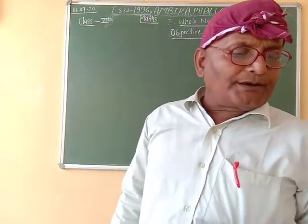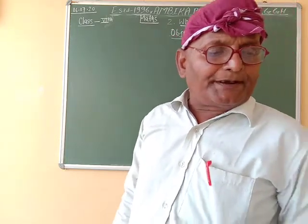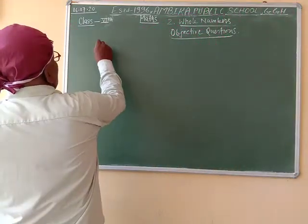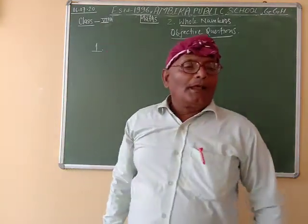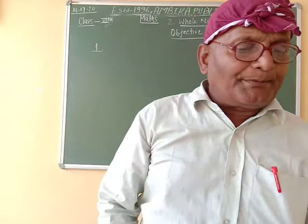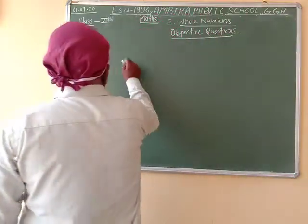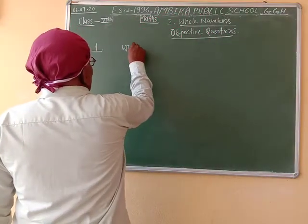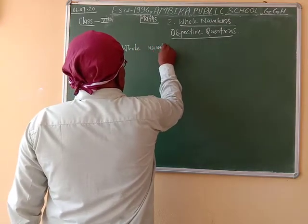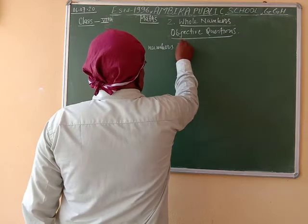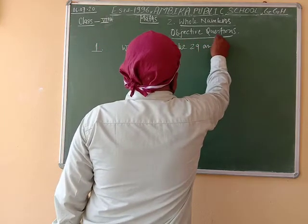Question number one: the number of whole numbers between 29 and 57 is — find the whole numbers between 29 and 57.